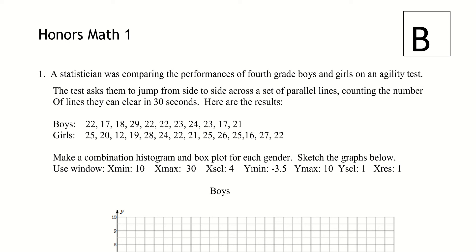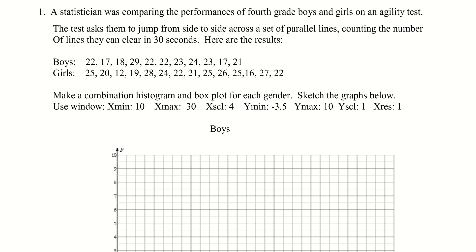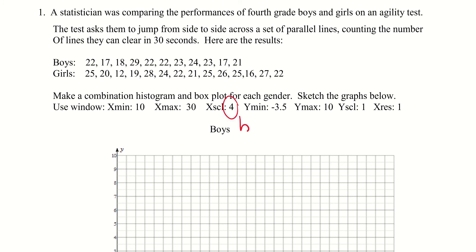I'm asked to make a combination of histogram and box plot for each gender and sketch the graph below. I'm told to use a particular window with a minimum X of 10, max X of 30, and an X scale of 4. That scale value determines the width of your bins — B-I-N — how wide each one is. So let's go ahead and do this.